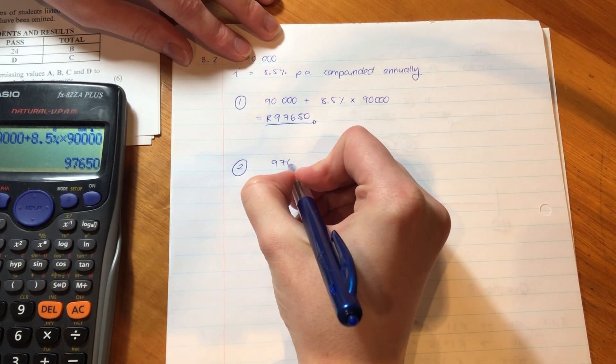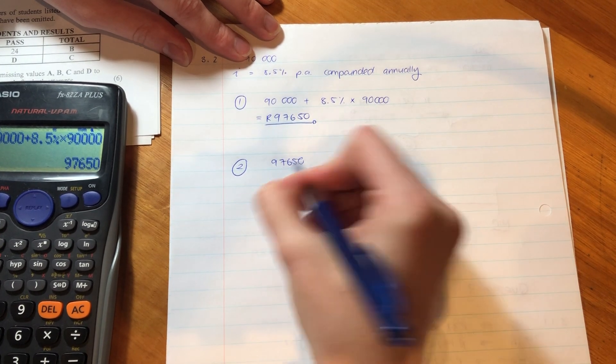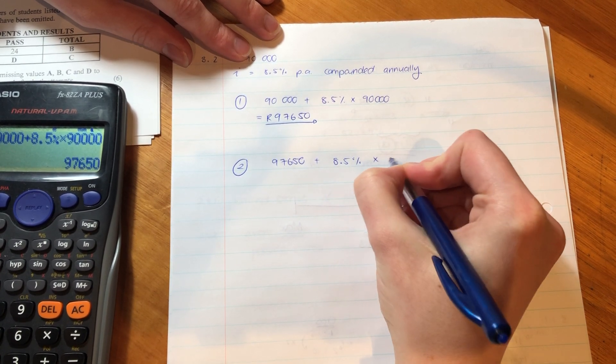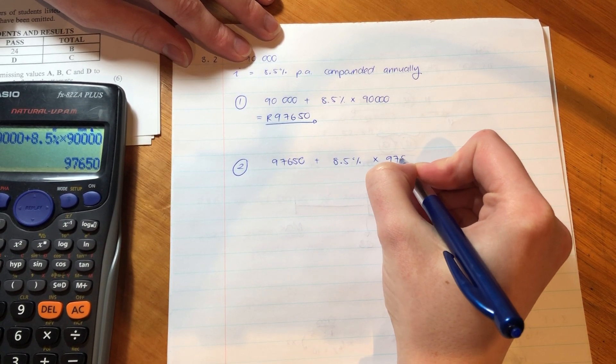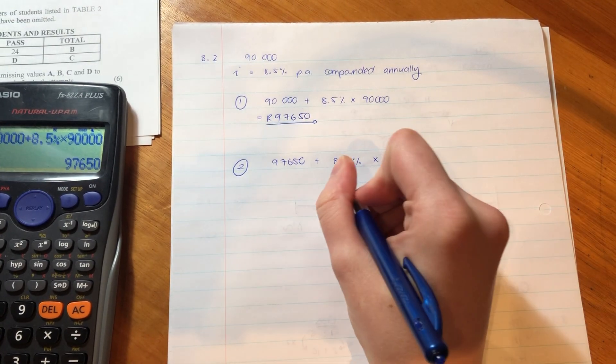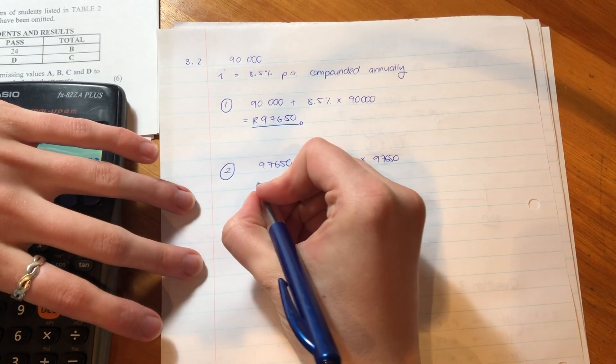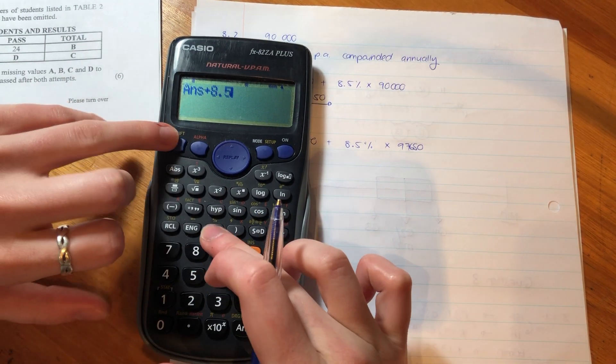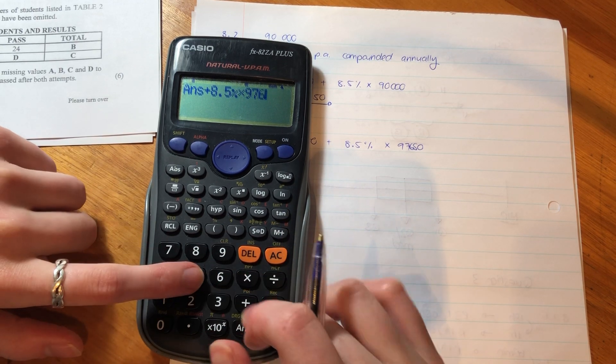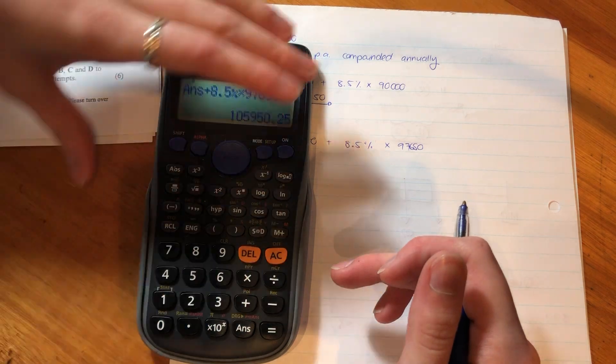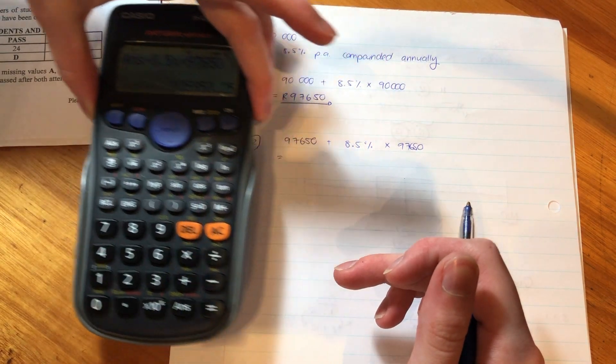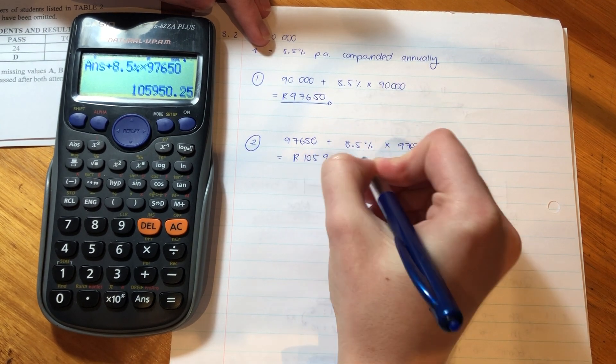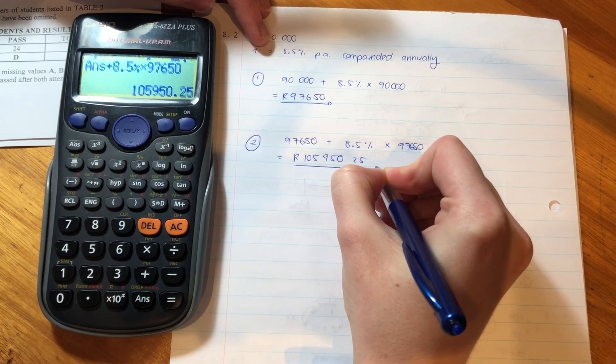Then, in year two, the beginning of year two, that's how much money he has. We've just calculated that. Then, he's going to earn 8.5% on that amount. So this is how much he has, and he's going to earn 8.5% on that. So we put that into our calculator. So he is going to have this much money at the end of the two-year period.